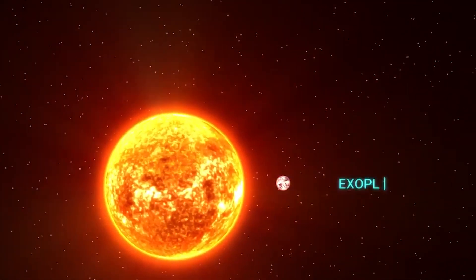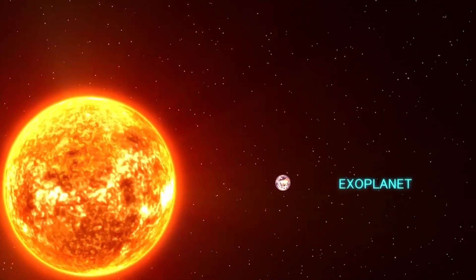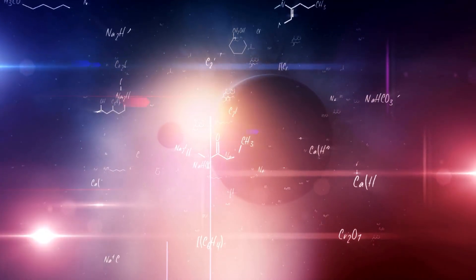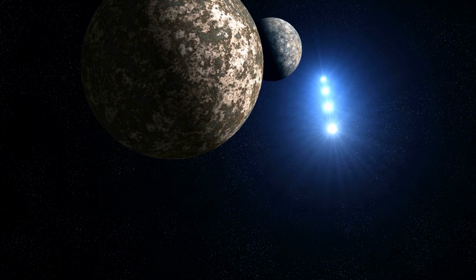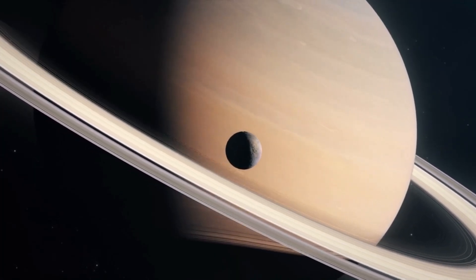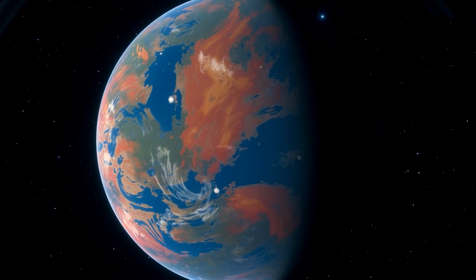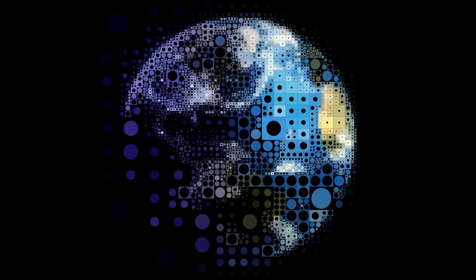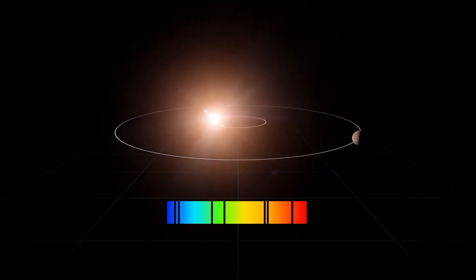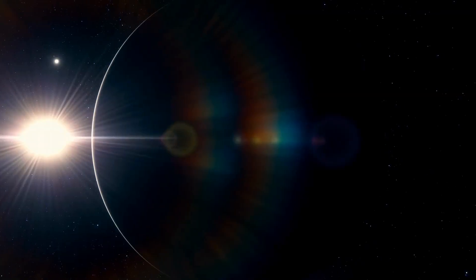Exoplanets are planets that orbit stars outside of our solar system. They come in a variety of sizes, masses, and orbital characteristics, making them a diverse group of celestial bodies. There are gas giants, ice giants, and rocky planets, and astronomers have used different methods to detect their existence, such as radial velocity, transit method, and direct imaging.